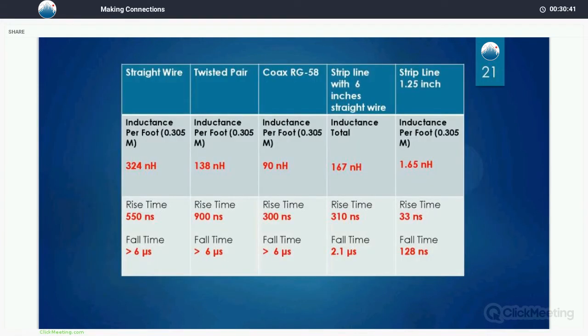So, here's a chart that compares these various items side by side. Straight wire is the worst. Twisted pair improves our inductance slightly. Coax is a little bit lower. Strip line with six inches of straight wire. Well, we've just ruined the whole point in using strip line.